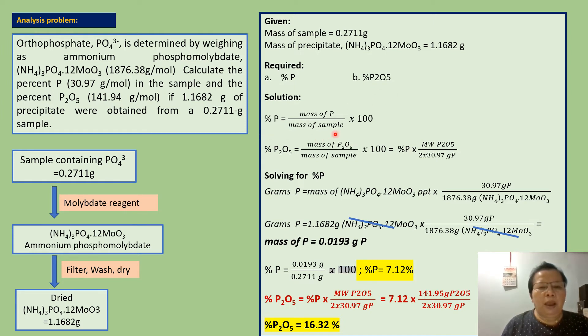To solve for percent phosphorus, we use this formula: mass of phosphorus divided by mass of sample times 100. To solve for percent diphosphorus pentoxide, we use this formula.